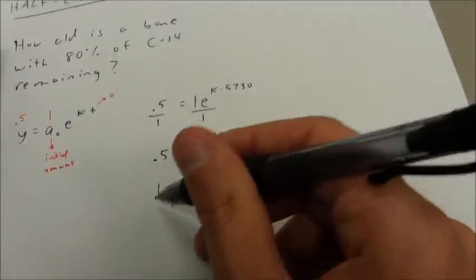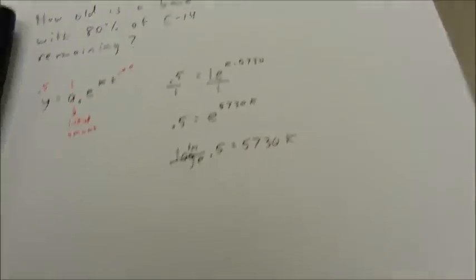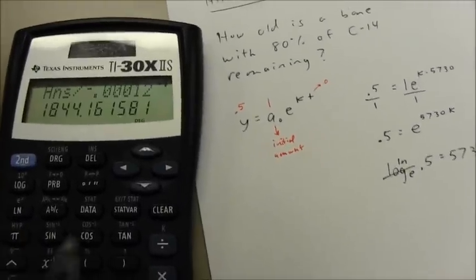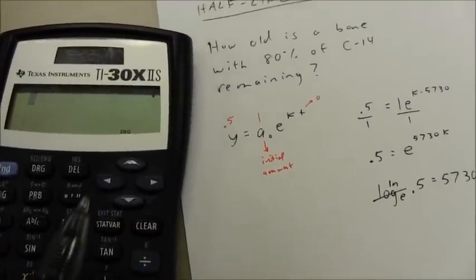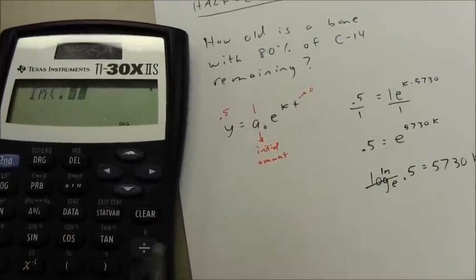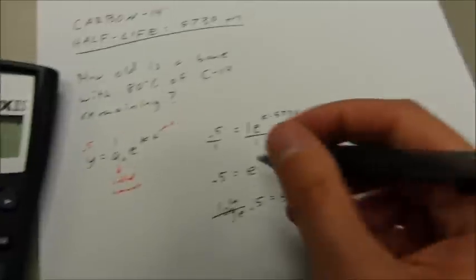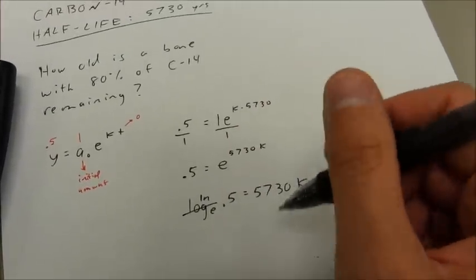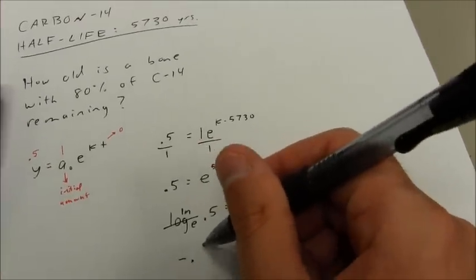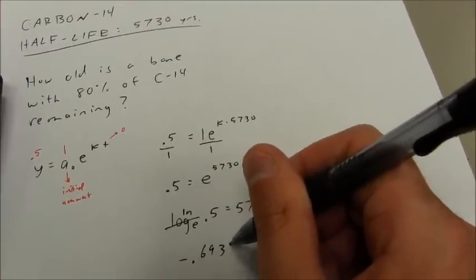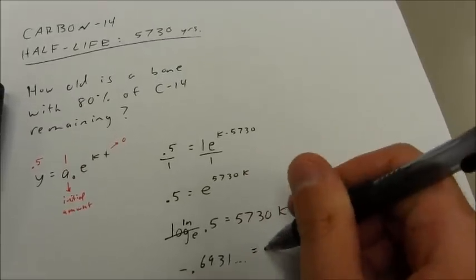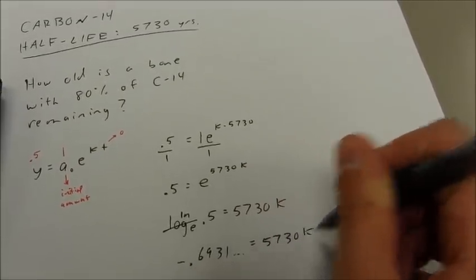Of course, that's a natural log there, an ln. So I can take the ln of 0.5. ln of 0.5 is going to be approximately negative 0.6931 equals 5,730k.